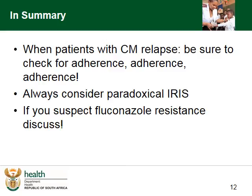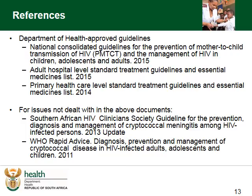In summary, when patients with cryptococcal meningitis relapse, be sure to check for adherence — but always consider paradoxical IRIS as a possibility. If you suspect fluconazole resistance, it's best to discuss with a consultant, as this is much less likely a cause. This was the last module of our eight modules on the diagnosis, management and prevention of cryptococcal meningitis. Thank you for joining us.